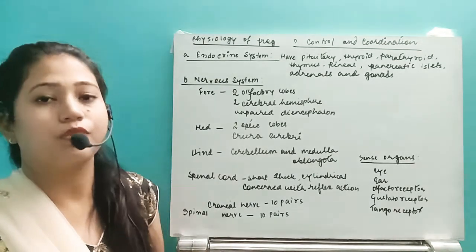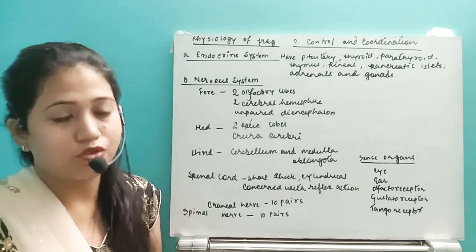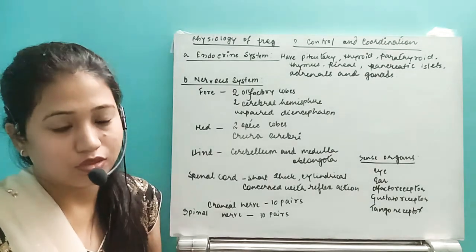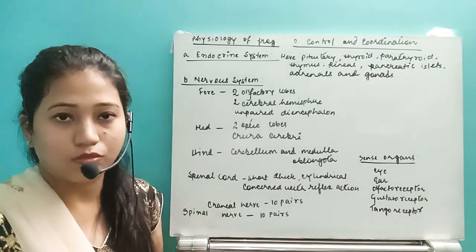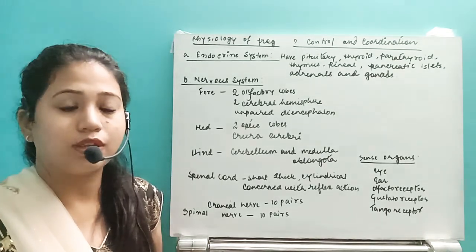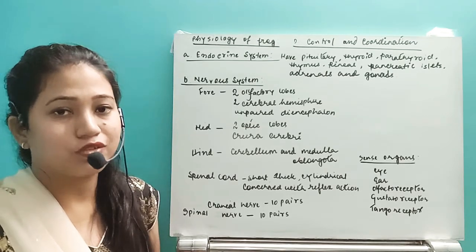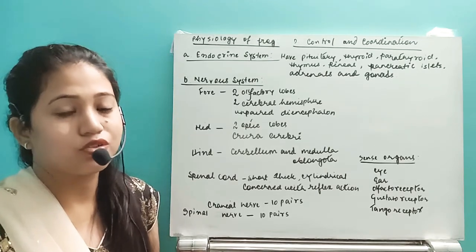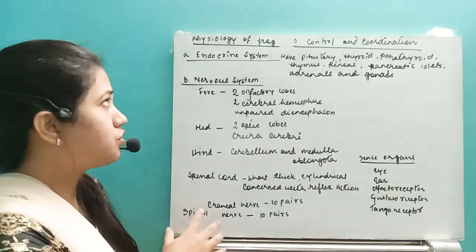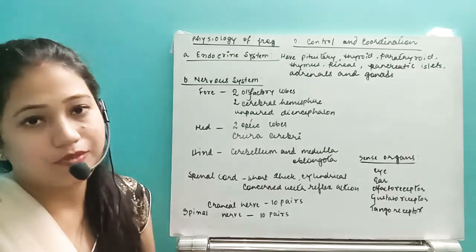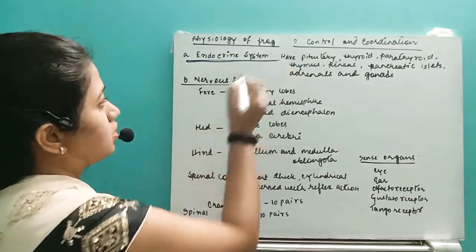The first system we are going to start with is control and coordination. We have two types: one is neural control and the second one is chemical control. In chemical control, different endocrine glands release different hormones which control the different body physiological processes, and neural control stimulates the different body organs to perform their functions.